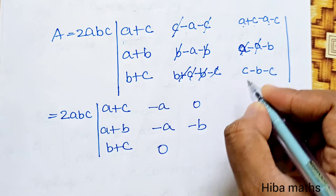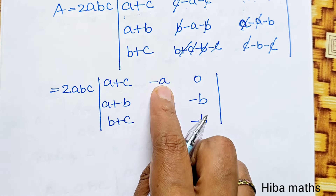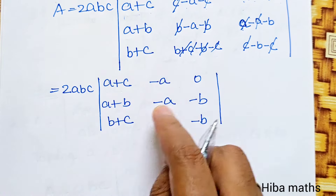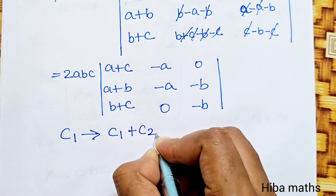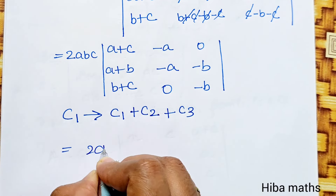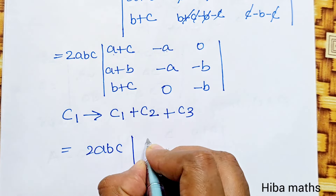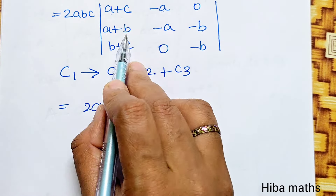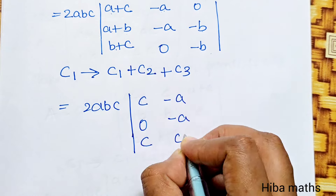A minus A cancels, minus B; C minus C cancels, minus B. Now we will do the next line. C1 turns to C1 plus C2 plus C3 — the same operations. Minus A plus A is 0, minus B plus B is 0, minus B plus C is 0. Minus A is 0, 0, minus B.